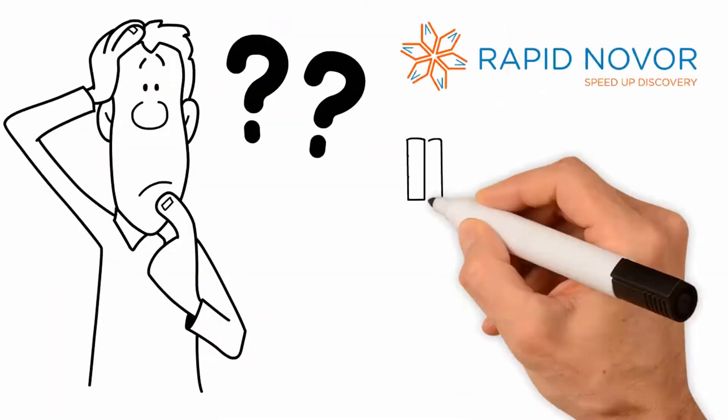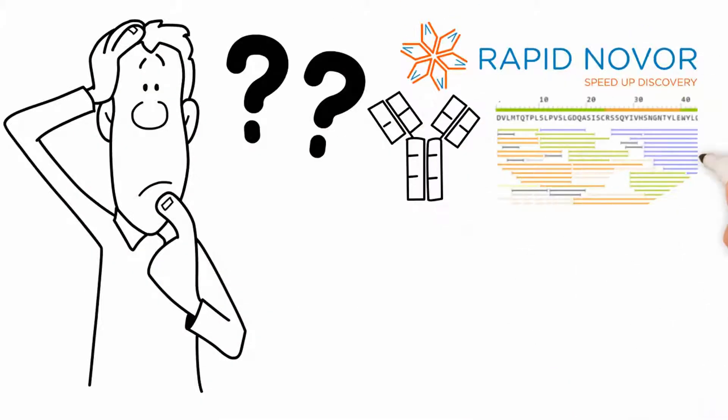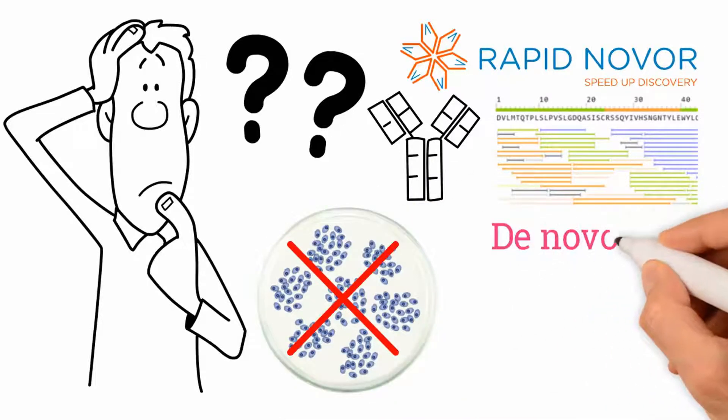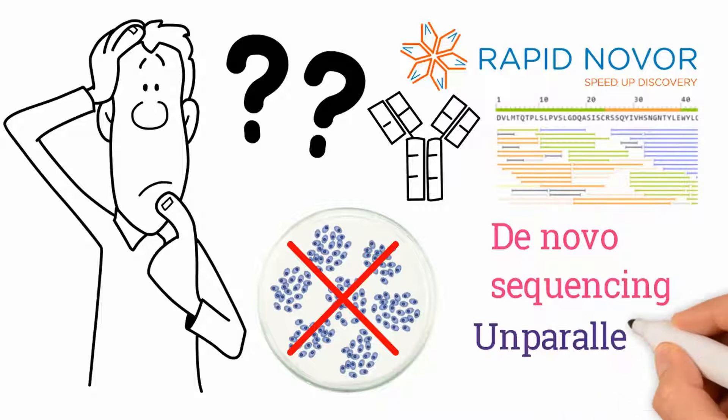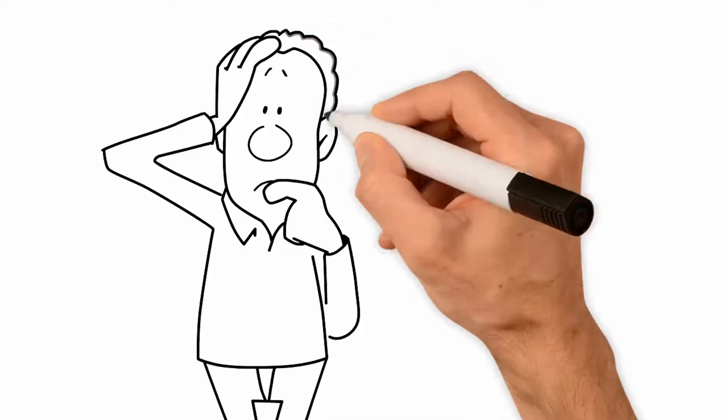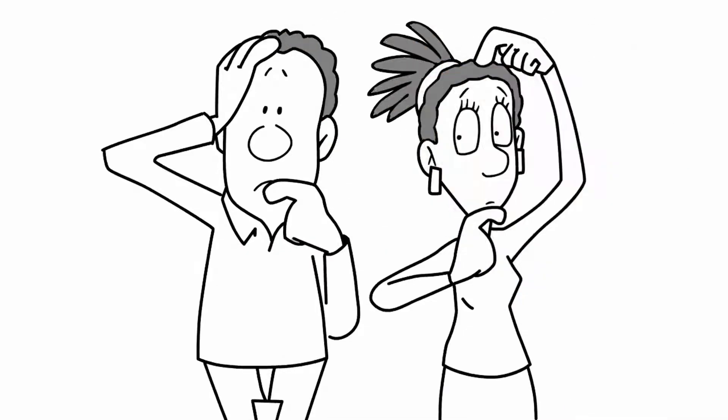Did you know that with RapidNovor's monoclonal antibody protein sequencing service, you don't need to have access to the cell line? You get real de novo sequencing and unparalleled accuracy, with the quality proven by hundreds of happy customers. But how do we do it? What's our general process?